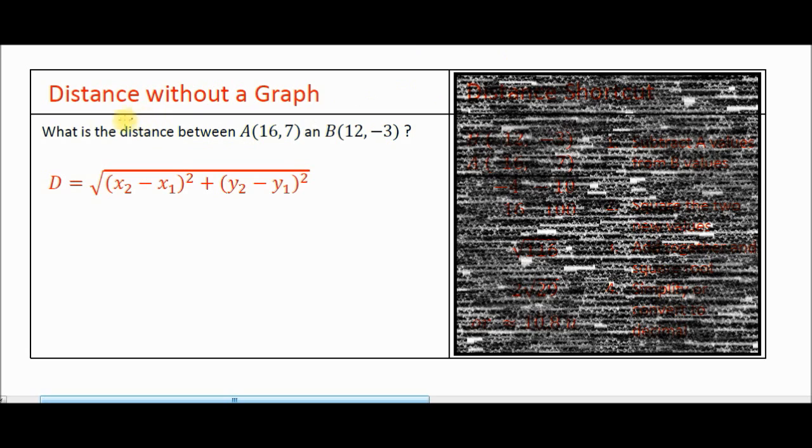Right below the question, go ahead and write the distance formula so that you have that as a reference because that is the most common way of determining the distance between two points without a graph. You're writing distance or d equals the square root of x sub 2 minus x sub 1 quantity squared plus y sub 2 minus y sub 1 quantity squared.